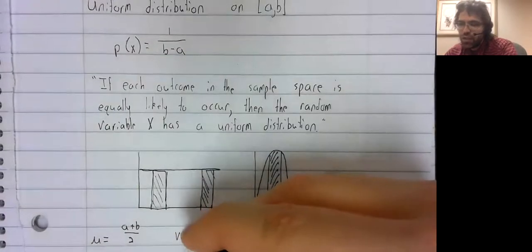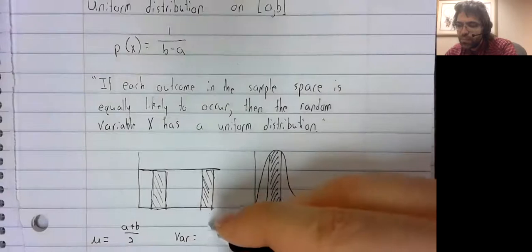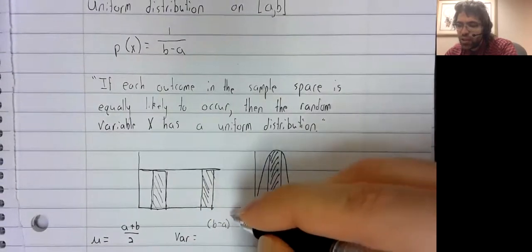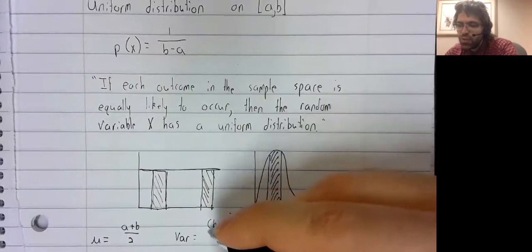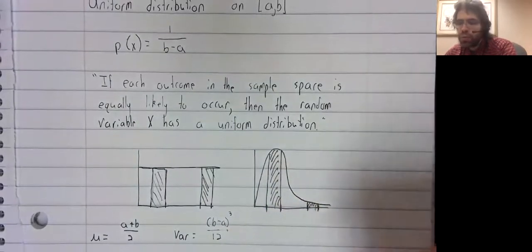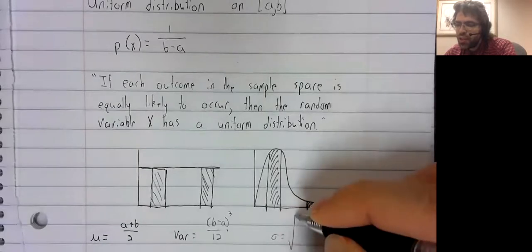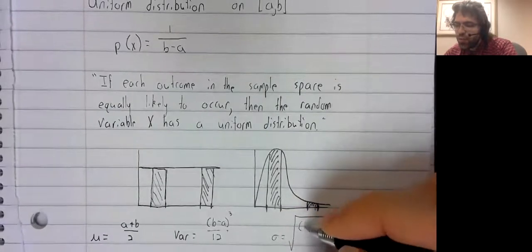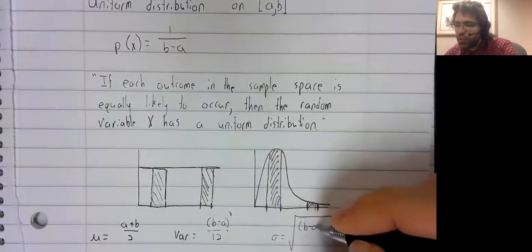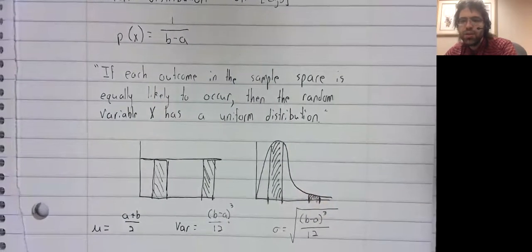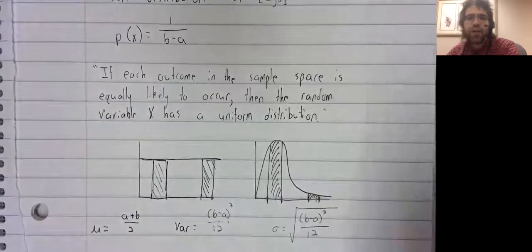The variance is B minus A cubed divided by 12. And the standard deviation is therefore the square root of B minus A cubed divided by 12.